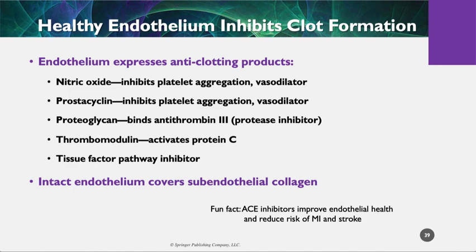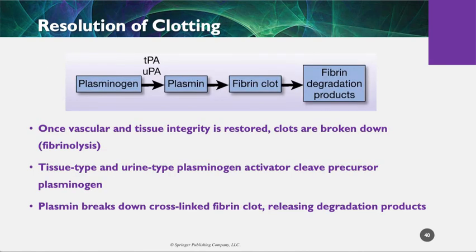Don't forget this part about healthy endothelium — it's so important. That's why ACE inhibitors work: because ACE inhibitors promote nitric oxide and prostacyclins and all the rest. They promote healthy endothelial function and that reduces risk of MI and risk of stroke. Once the clot is formed, the body needs to get rid of it. Plasminogen — and you can remember that because tissue plasminogen activator or TPA, or urokinase — those plasminogen activators start the unclotting process, producing plasmin. The fibrin clot gets undone and fibrin degradation products or fibrin split products are produced, which can be measured in the blood.